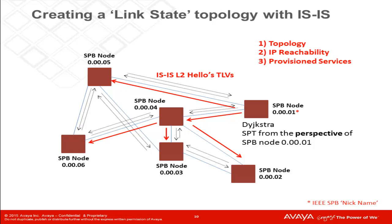First of all, nothing gets forwarded into a Shortest Path Bridging network without the sense of a path. As a result, there is no stateless forwarding within it. This results in a very deterministic method for the movement of data. This all starts with the establishment of a network topology. Once the switches establish adjacencies with one another, they exchange a series of type-length values which provide for the network topology. Once a complete network sequence is created, the Dijkstra algorithm is run. Here we show the resulting shortest path Dijkstra tree for SPB node 0.00.01. The number is the nickname of the SPB node — basically a short form identifier.